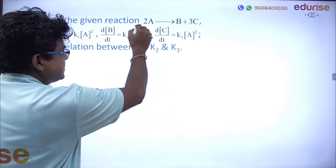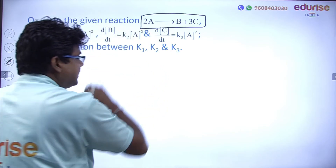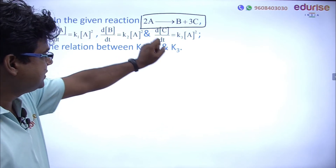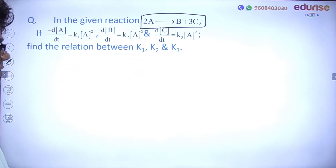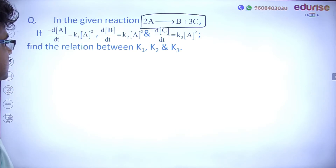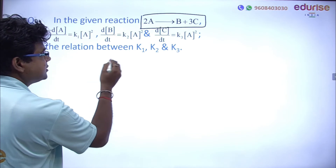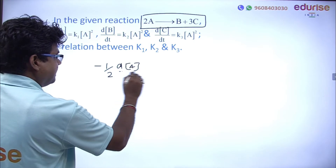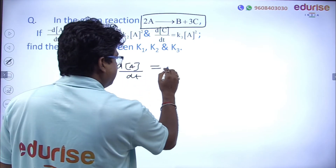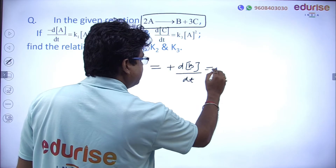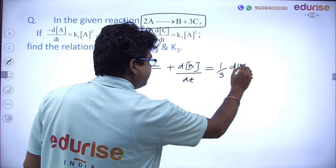We write the rate of reaction in terms of disappearance per mole and appearance per mole: −(1/2)dA/dt = dB/dt = (1/3)dC/dt. Now it is given that −dA/dt = K₁[A]², dB/dt = K₂[A]², and (1/3)dC/dt = (1/3)K₃[A]². We substitute: (1/2)K₁[A]² = K₂[A]² = (1/3)K₃[A]².